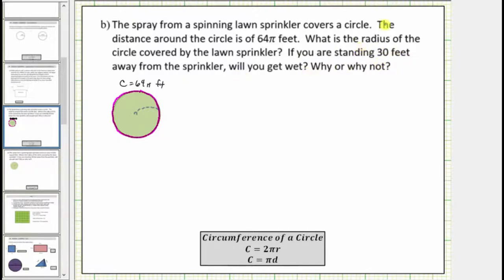Well we can determine the radius of the circle by using the circumference formula because we know the circumference is equal to 64π feet. We'll use the circumference formula C equals 2πr because we are trying to determine the radius.